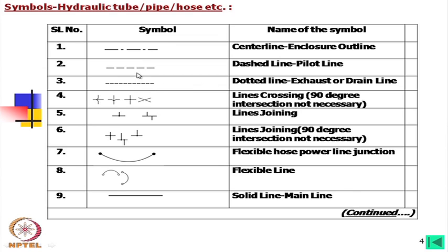There is also a dash with small dotted line for the exhaust or drain line. In a drawing, if both these lines are given, careful study will show which is the pilot line and which is the drain line.